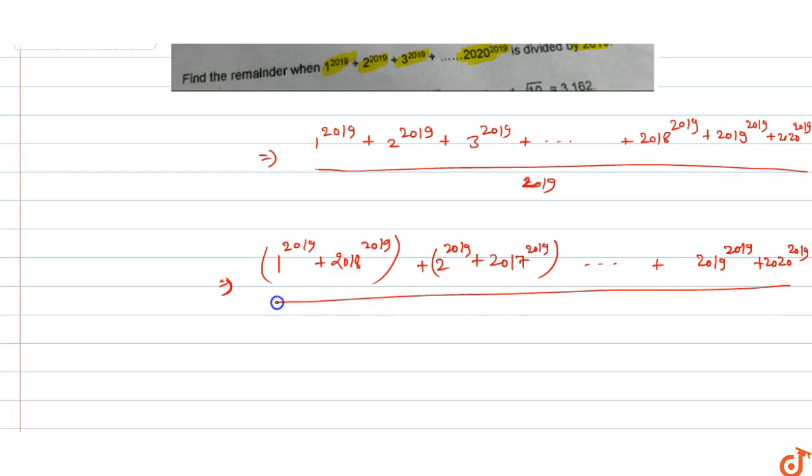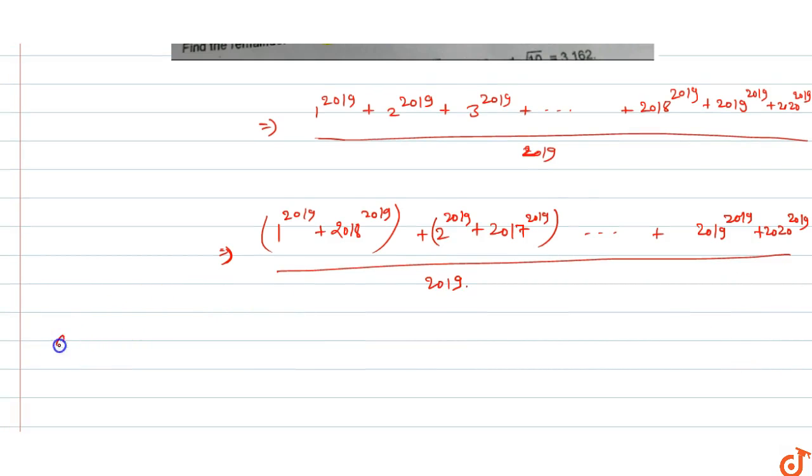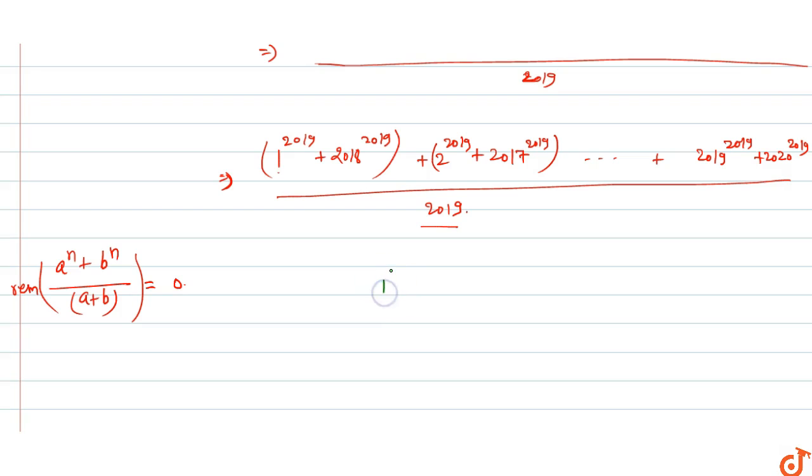Now the remainder theorem says that a raised to power n plus b raised to power n divided by a plus b gives remainder 0. So 1 raised to power 2019 plus 2018 raised to power 2019, when both sum to 2019 and we divide by 2019, the remainder is 0.